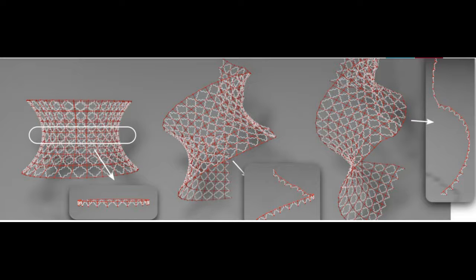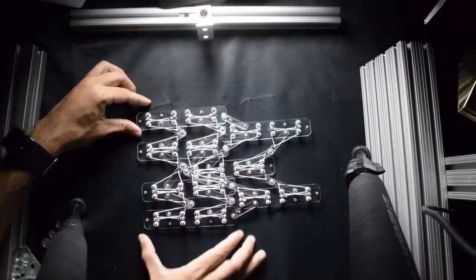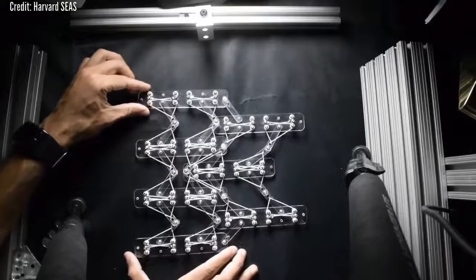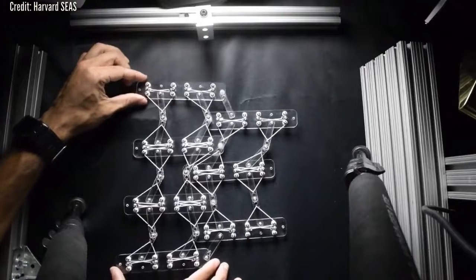These structures allow for independent control of the geometry and mechanics, laying the foundation for engineering functional shapes using a new type of morphable unit cell.